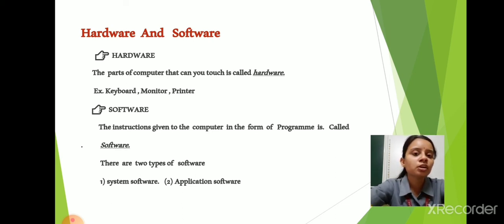And what is software? You cannot touch it. The instructions given to the computer in the form of programs are called software. There are two types of software: system software and application software. Both play important roles in running the computer, which we will learn in future lessons.